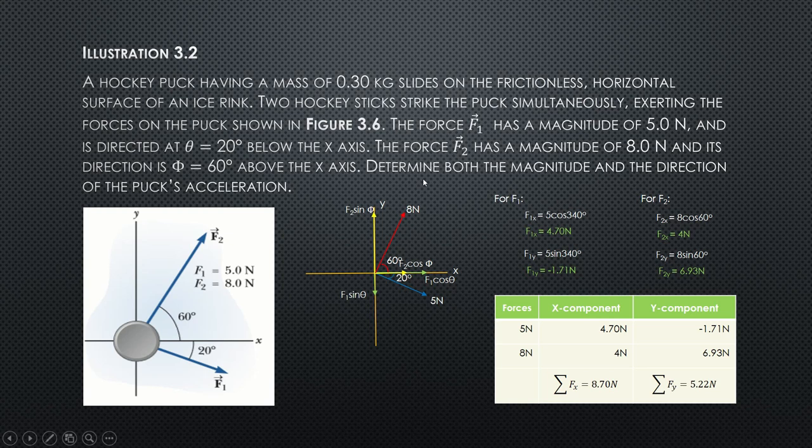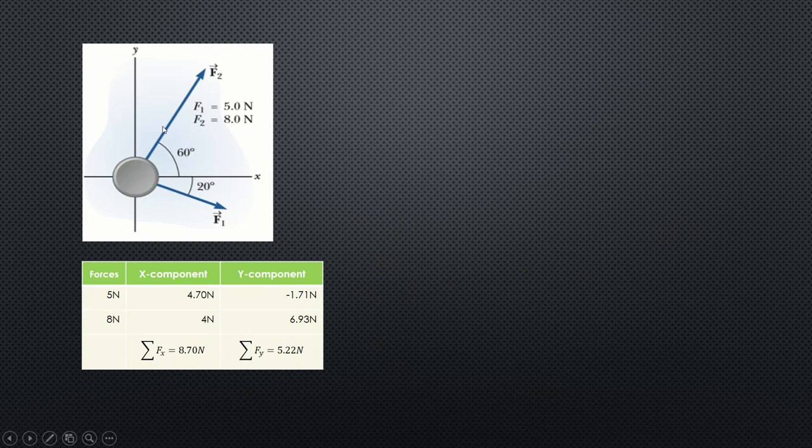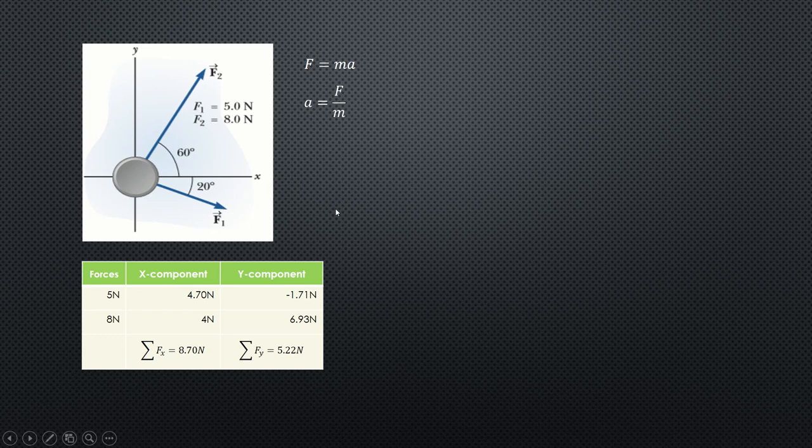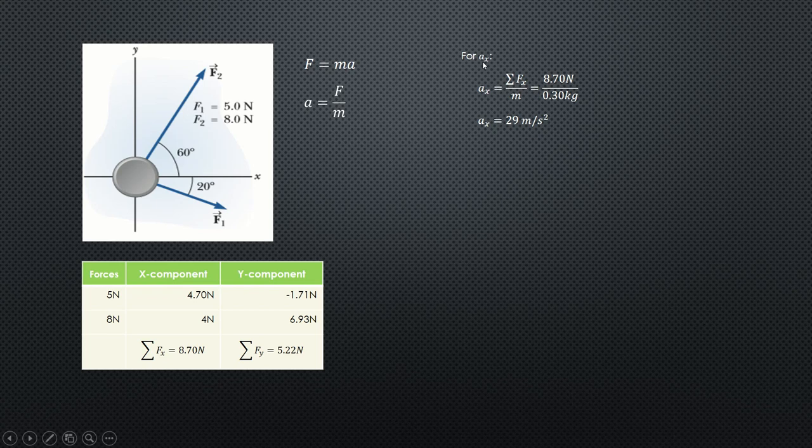From the problem, we need to determine the magnitude and direction of the acceleration. We have summarized the values of x and y components and their forces. You can solve for acceleration using the formula force equals mass multiplied by acceleration. Using this formula, you get the formula of acceleration, which is equivalent to force over mass. The mass of the puck is given as 0.3 kilograms.